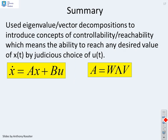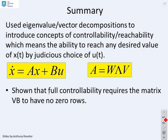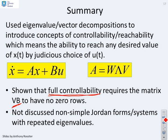So a summary. We've used eigenvalue vector decompositions to introduce concepts of controllability or reachability, which means the ability to reach any desired value of x(t) by a judicious choice of u(t). And we've shown that full controllability requires the matrix VB to have no zero rows, where V is the matrix of left eigenvectors. We've deliberately not discussed non-simple Jordan forms, systems with repeated eigenvalues, because it just gets messy without really adding much insight.